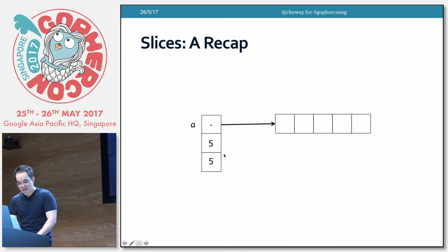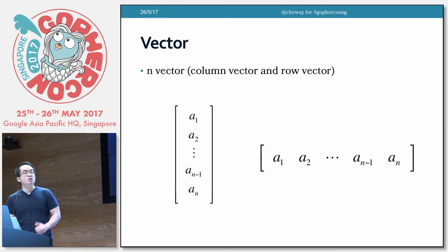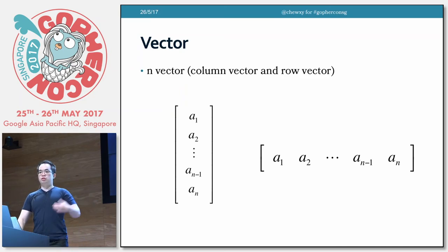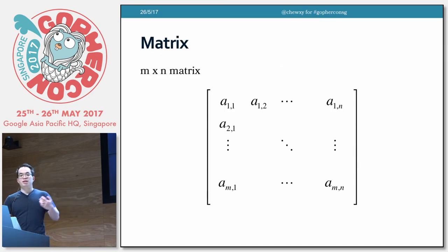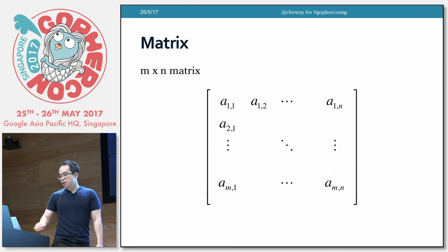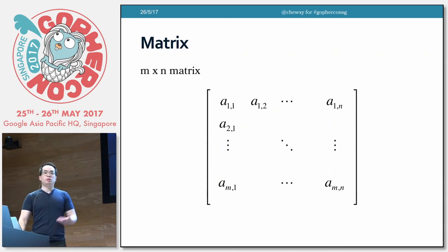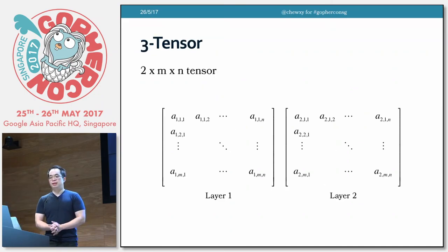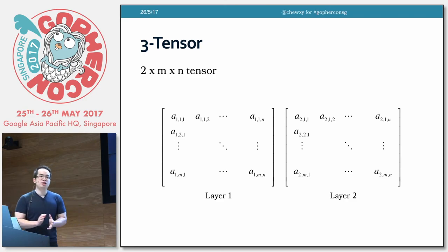Let me talk about the math for a bit. Here we have a vector — you can have a column or a row vector. If you take these vectors and stack them against each other, you get a two-dimensional vector, called a matrix — an M by N matrix. And if you take these matrices and stack them layer by layer, you have a three-dimensional matrix, or a three-tensor. In this example, I have a two by M by N tensor. The question is: how do you go about implementing these abstract mathematical concepts in a programming language?